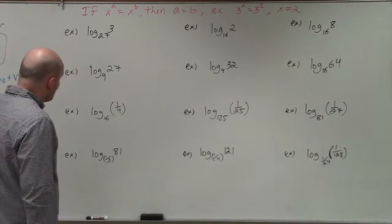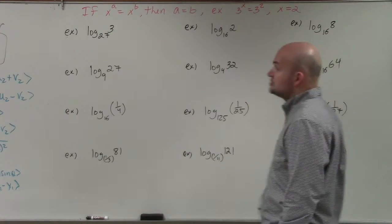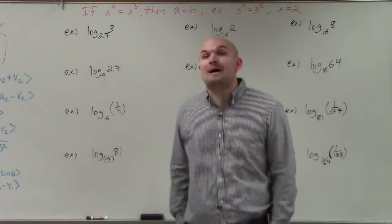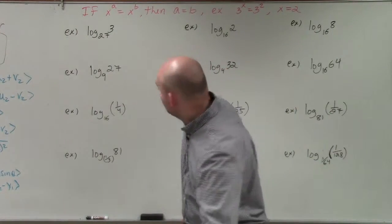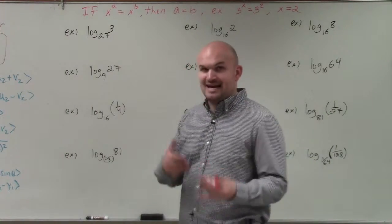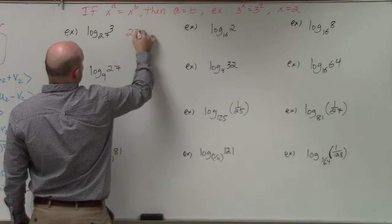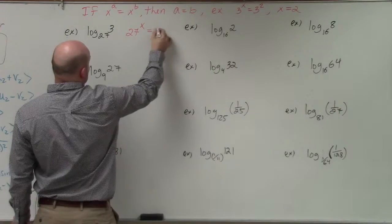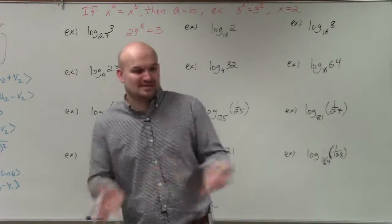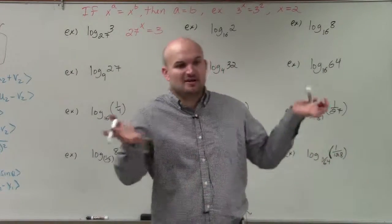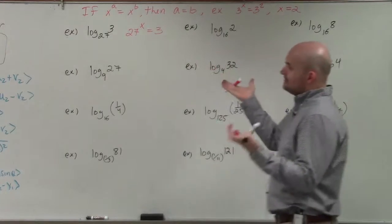When we're looking at a logarithm, we're basically asking: 27 raised to what power is going to equal 3? I always think it's beneficial when doing these problems to rewrite it in exponential format. So I can say, 27 raised to what number is going to equal 3? I don't immediately know that — it's not as simple as 3 raised to what power gives you 9, which is obviously 2. This one is not very transparent.